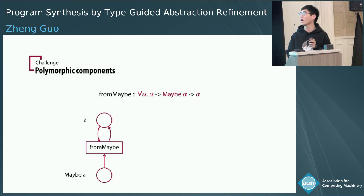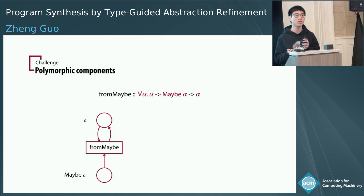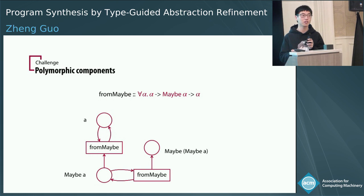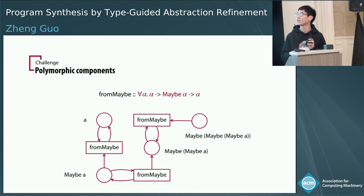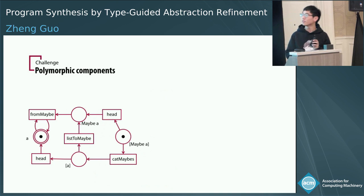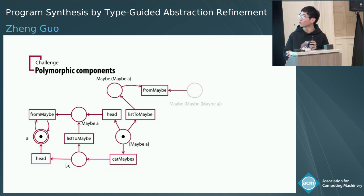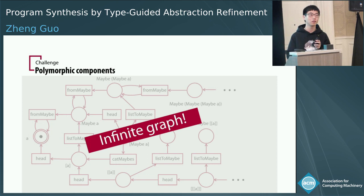Let's try to add all instantiations. We start by substituting alpha with type A to get one instance — as shown in previous slides. But with this instantiation we get a new type, maybe A. We can substitute alpha by maybe A again, getting another instantiation, which brings yet another new type. We substitute again, and again, and we get an infinite chain. In fact, all the components in the previous Petri Net are polymorphic. If we try to add all their instances into the Petri Net, the graph grows larger and larger and turns out to be infinite. Our approach aims to turn this infinite graph into a finite one so that we can benefit our search.